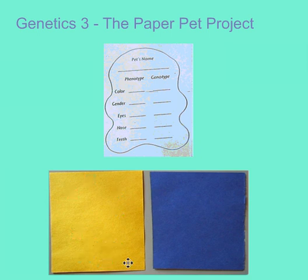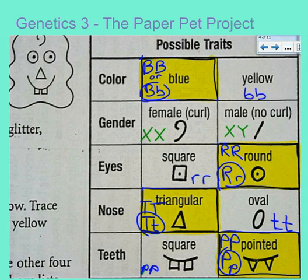The next step is figuring out the genotype. Don't forget to give your pet a name as well. We then have to figure out what genes your pet would have to give it the phenotypes you chose. This chart can help you figure out what alleles your paper pet is going to have. Now, I highlighted the dominant traits: blue is dominant over yellow, round eyes is dominant over square, triangle is the dominant nose, and pointed is the dominant teeth.